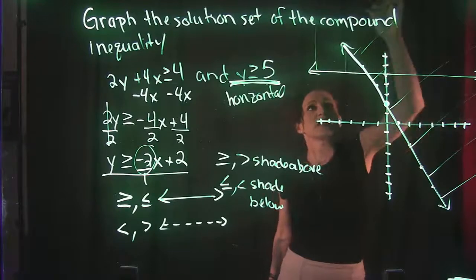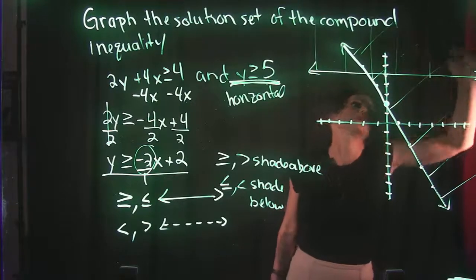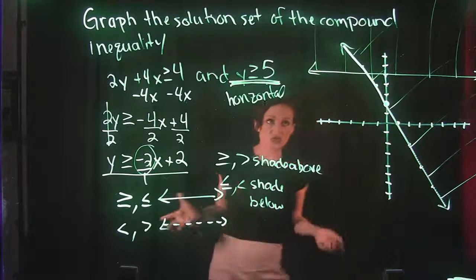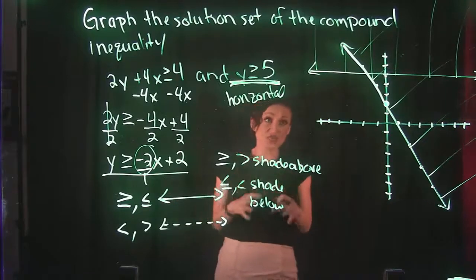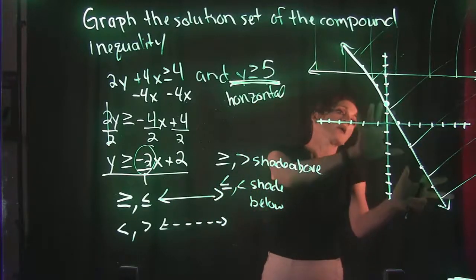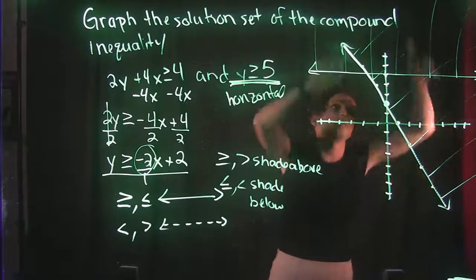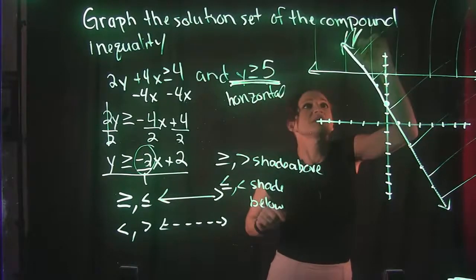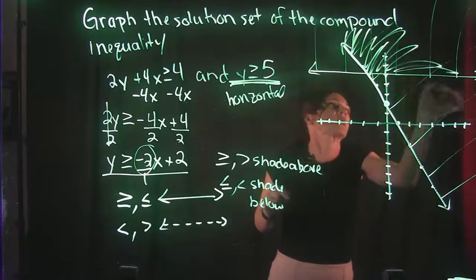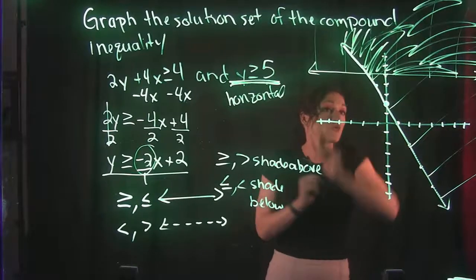Now, our solution is where the two areas are shaded together. So if we want above this line, but above this one, that means all this space right here is where they are both shaded. Just this area here.